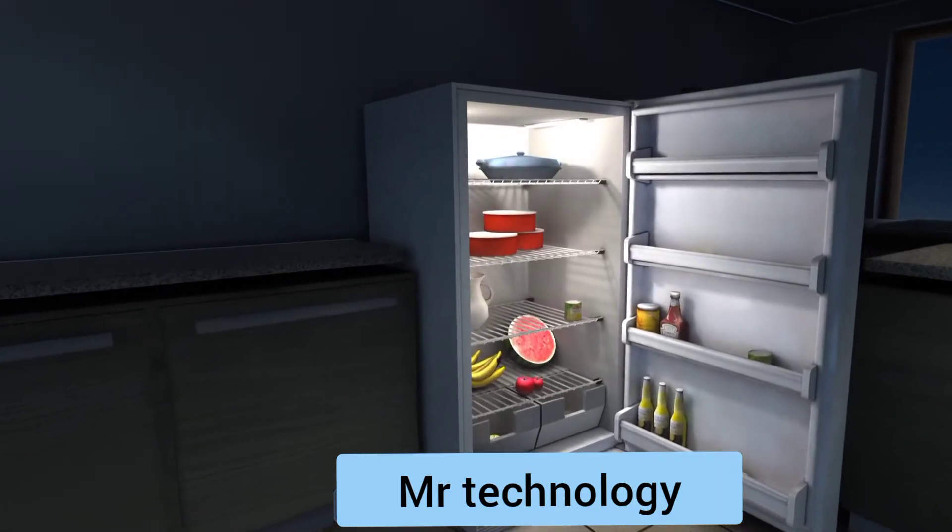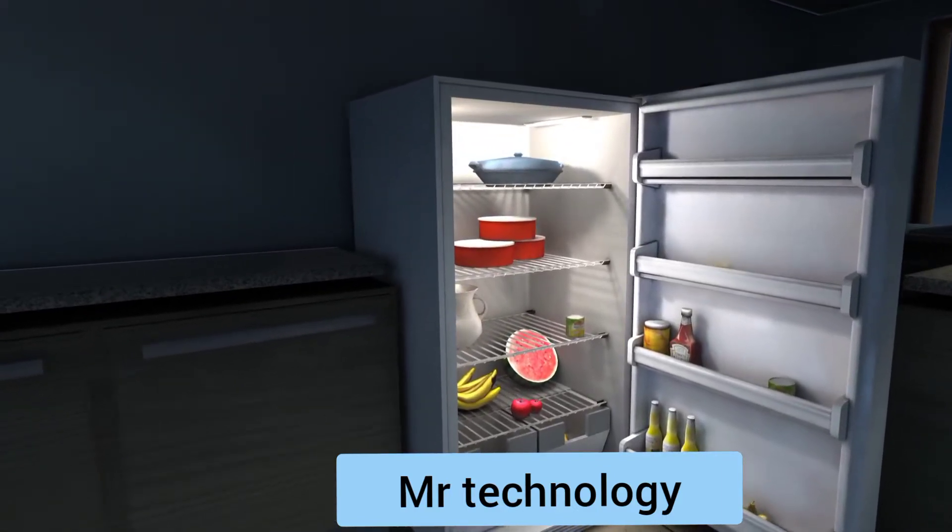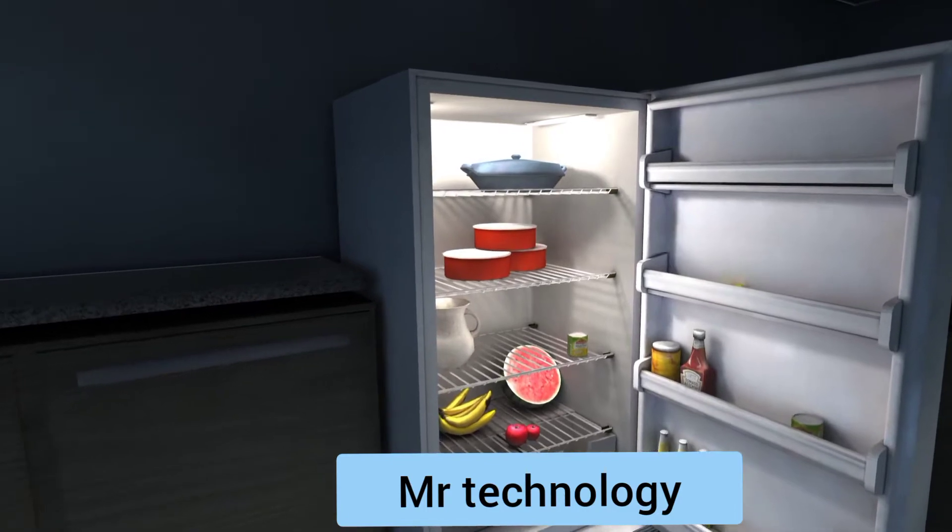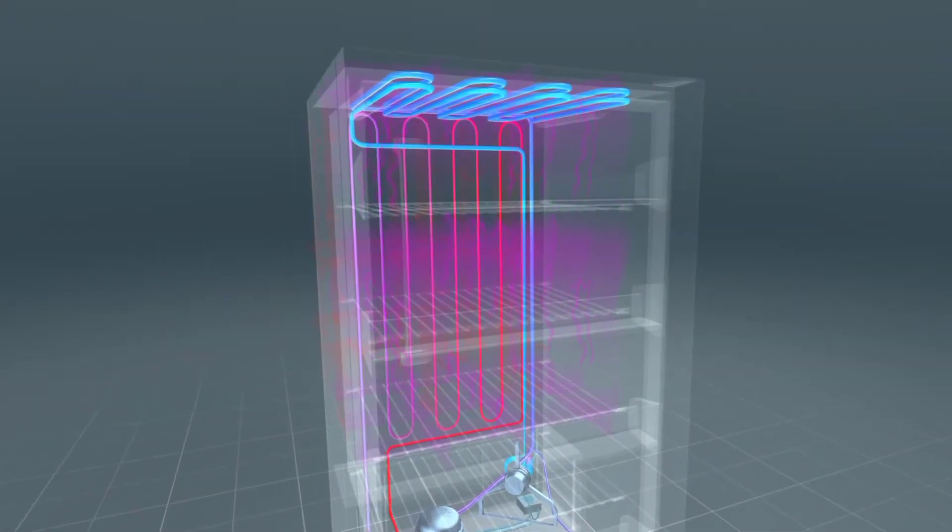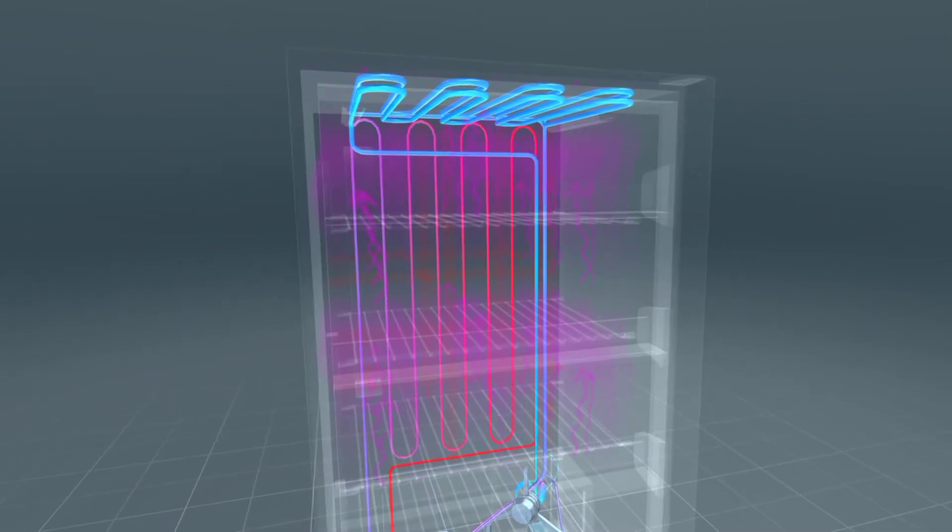While a refrigerator cools food stored inside, it draws heat away from the food compartment and releases it outside. Let's follow the phases of this process starting in the food compartment.